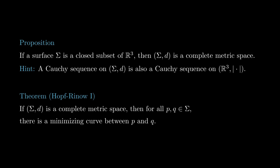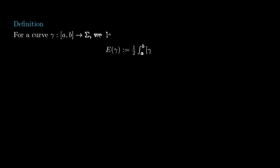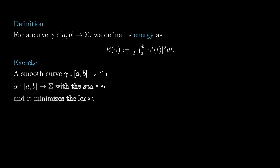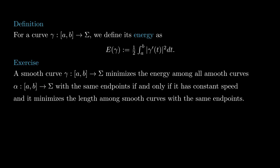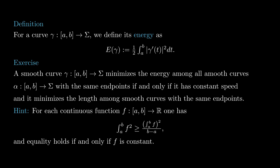Before we analyze how minimizing curves behave, let's take a look at the energy of a curve. If we have a smooth curve gamma, we define its energy to be one half of the integral of its speed squared. Contrary to the length, the energy of a curve depends on the parametrization one uses, but we can use this fact as an advantage. As a hint, recall that by the Cauchy-Schwarz inequality, the integral of f squared along an interval [a,b] is greater or equal than the integral of f, squared over (b-a), for each continuous function f, and equality holds if and only if f is constant.